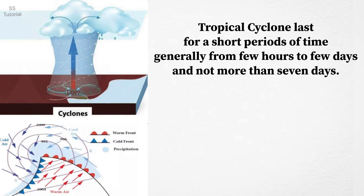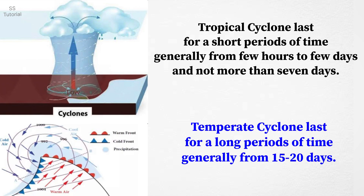Generally tropical cyclones last for a short period of time, usually from a few hours to few days and not longer than 7 days. Whereas temperate cyclones last for a long period of time, generally from 15 days to 20 days.